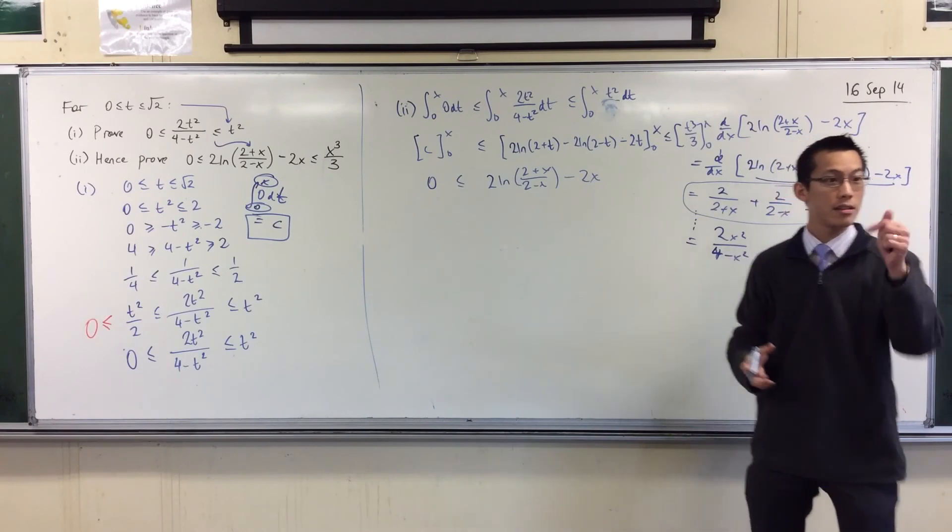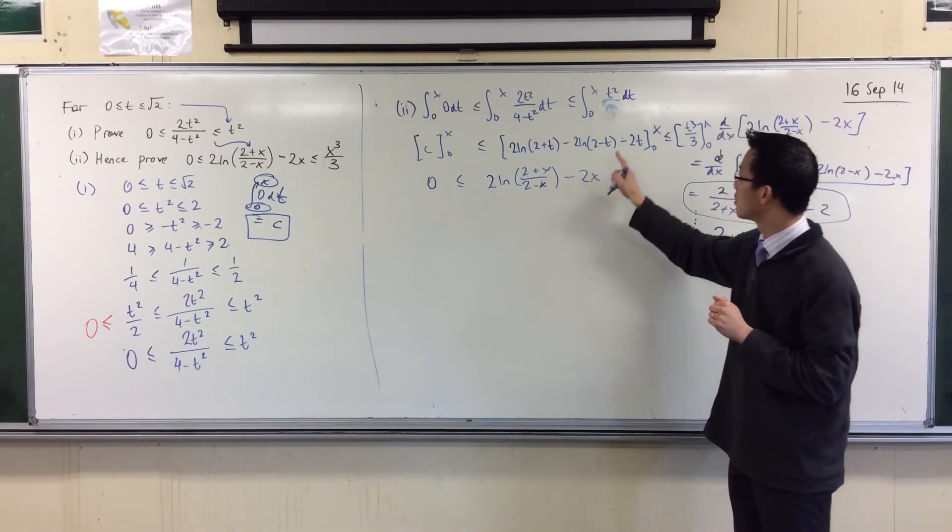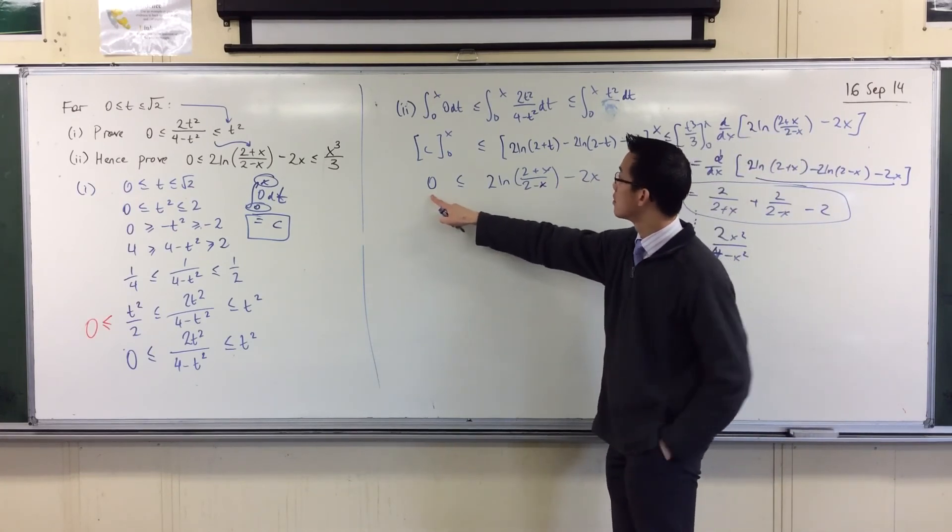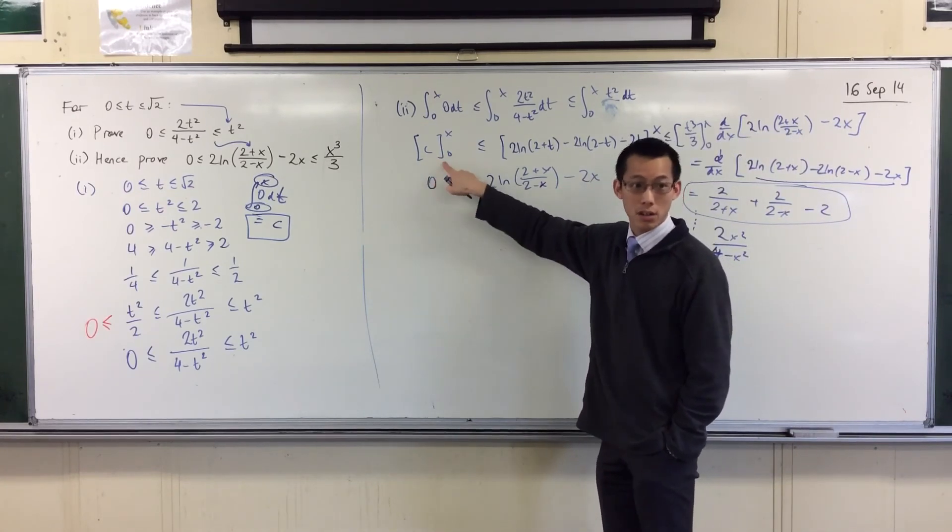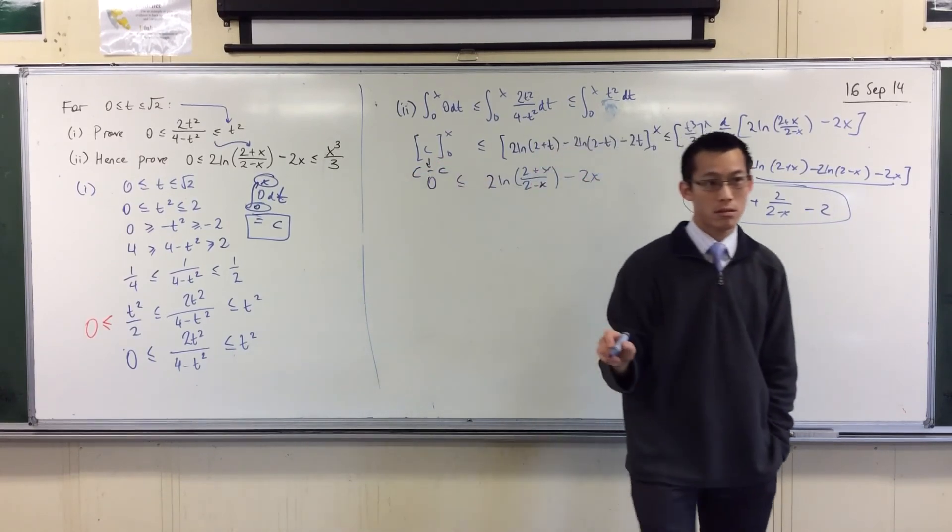Is it x? No. Where? C. Here. There's no t. It's just a constant. It's just a constant. So it's a constant minus a constant. Right? So it becomes 0.